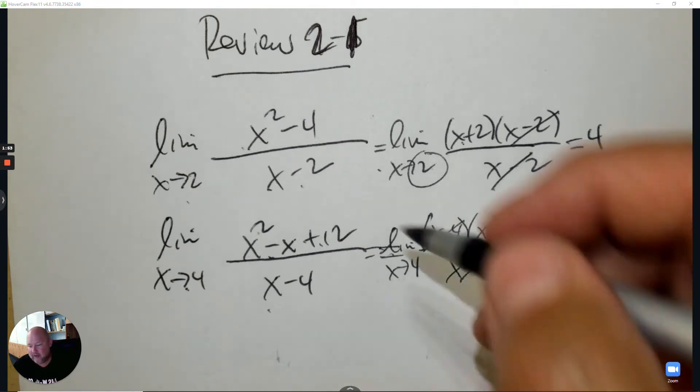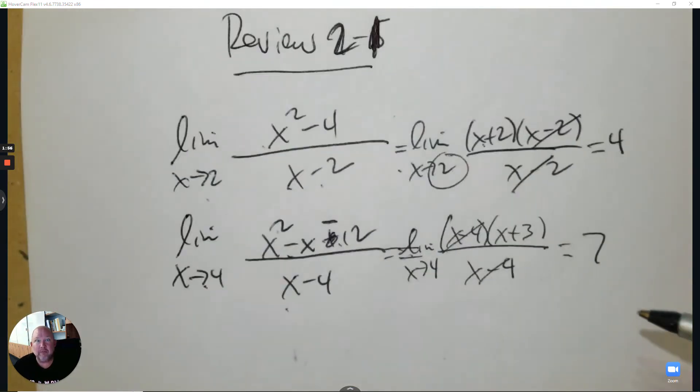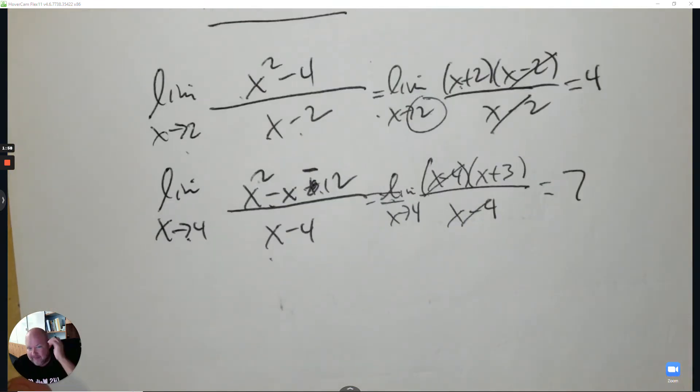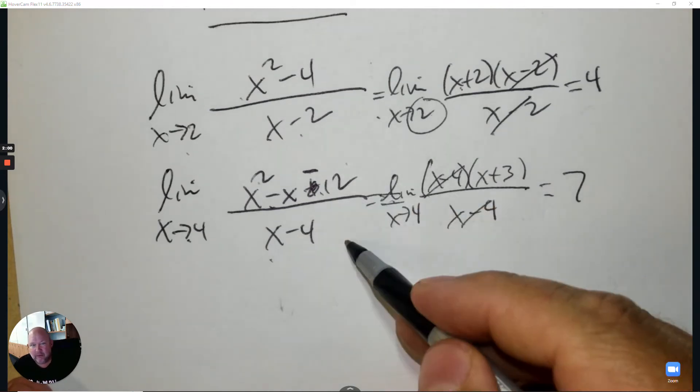Something's off. I know it's off. This should say minus 12. Took me this whole time to figure that out. Now when you plug in 4, it's 0 over 0, it factors, and you get the idea.